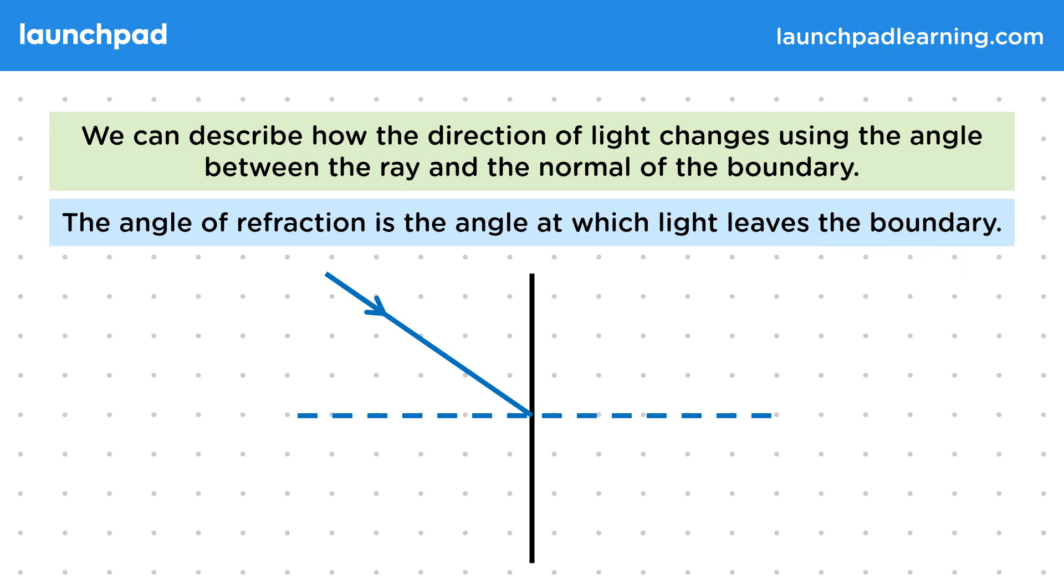So if the light refracts and travels in this new direction, then the angle between this ray and the normal will be the angle of refraction. If the ray has bent towards the normal, then this will be smaller than the angle of incidence.